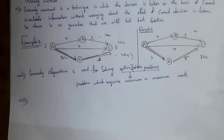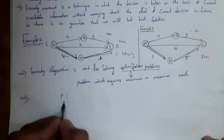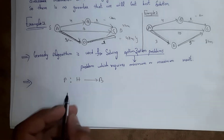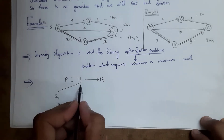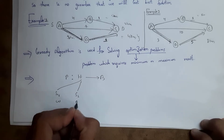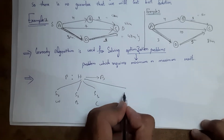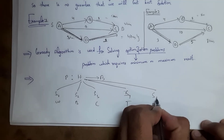In greedy method, you need to understand two terms: feasible solution and optimal solution. Consider this optimization problem — I need to travel from Hyderabad to Bangalore. There are five ways: by walk, by bike, by car, by train, and by flight. The condition is I need to reach Bangalore from Hyderabad within 3 hours.